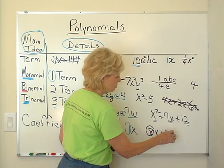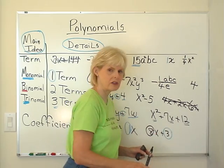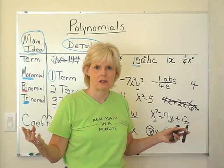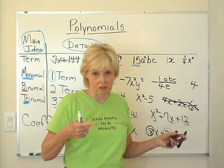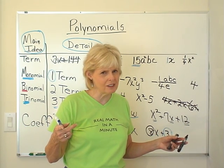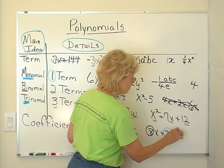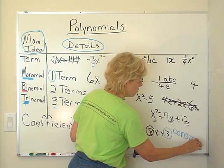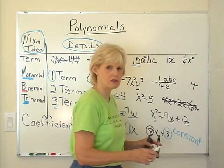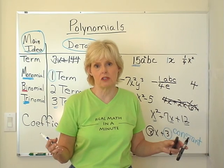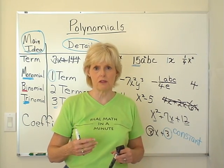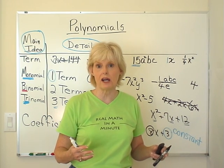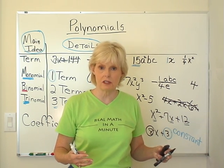What did we call it when you just have a number stuck out here without a variable? Just a number. An arithmetic number. Starts with a C. It's not coefficient. So what is it? Remember from back. It is a constant. Exactly right. Good. It is a constant. So we want to make sure that we get the difference in a constant, which is just a number, and a coefficient, which is the number in front that leads off the term. The coefficient could be a fraction. It could be positive or negative. It could be a decimal.